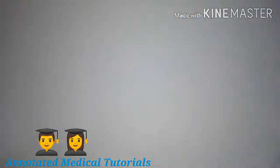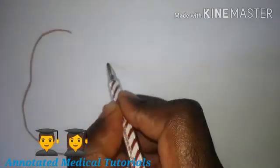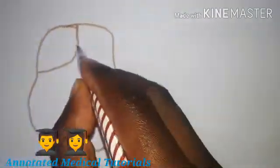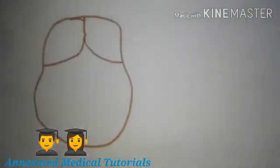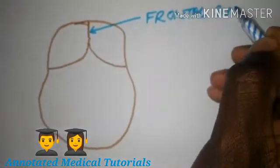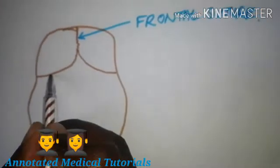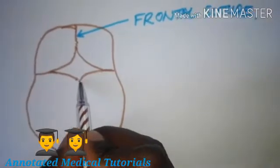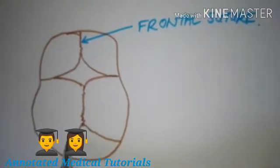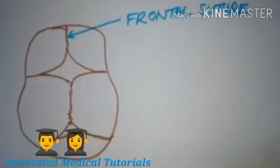Most of the bones at birth are ossified, but the process is incomplete and it leaves gaps between the bones of the skull — we call these fontanels. Here I'm going to draw the neonatal skull. We have the frontal bone separated into two halves by the frontal suture, then the coronal suture separating the frontal from the parietal bones, then the sagittal suture separating the two parietal bones, and then the lambdoid suture separating the parietal bones from the occipital.